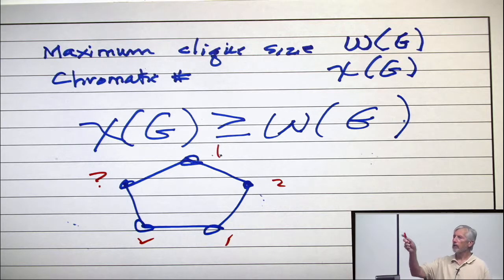So, the point is, chi can be larger than omega. Maybe only one larger. Maybe a lot larger. See ya on Thursday.